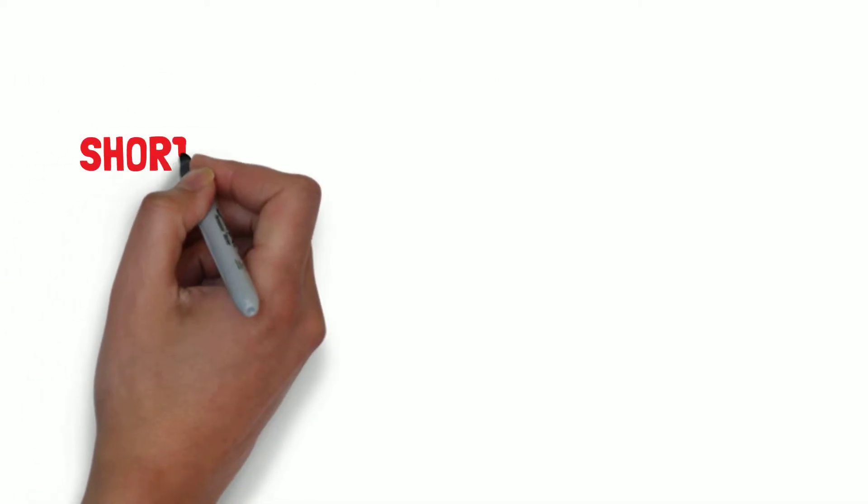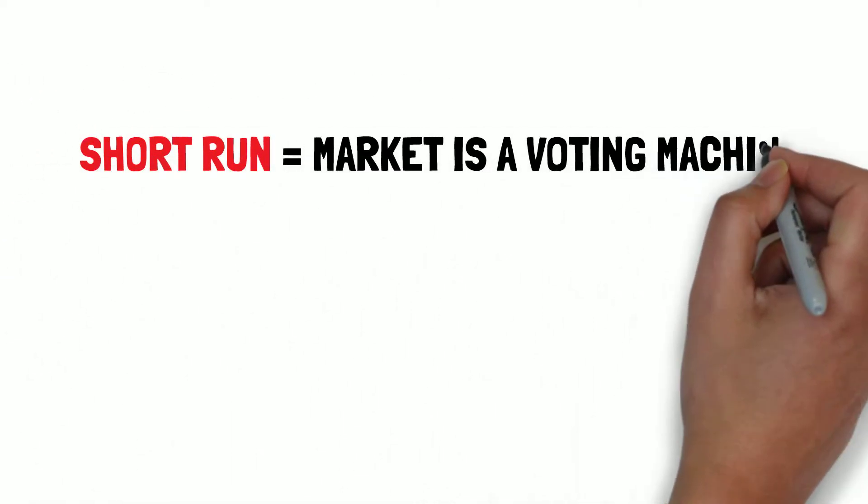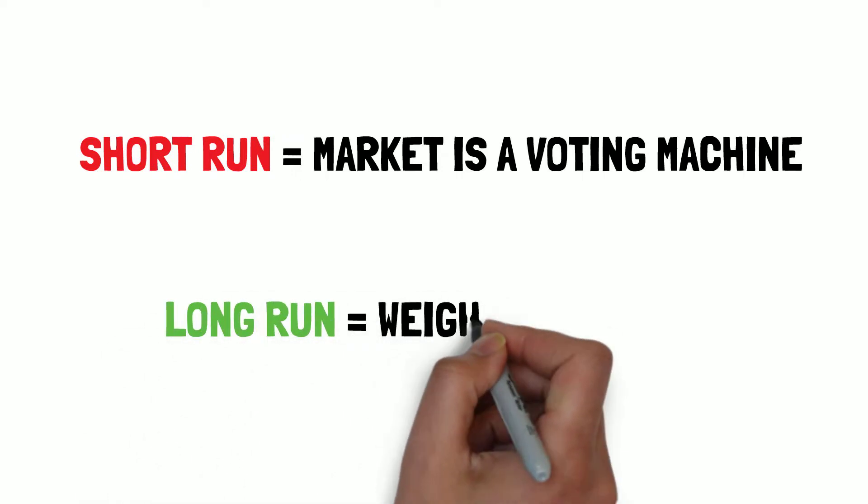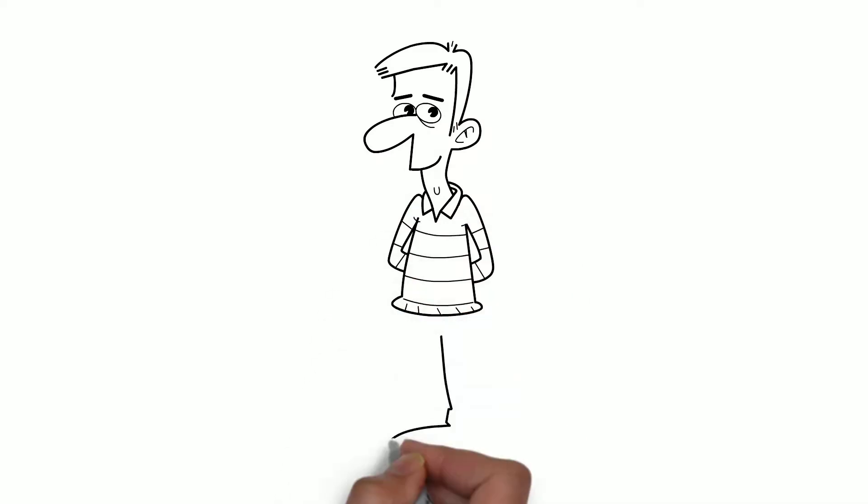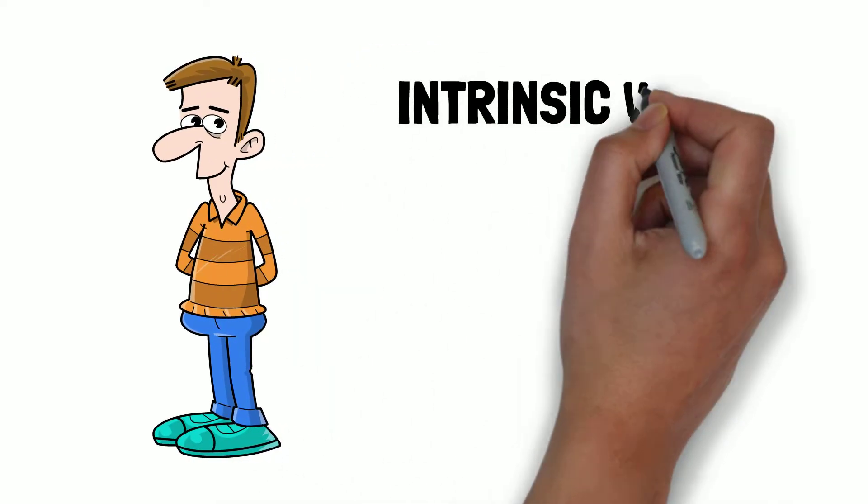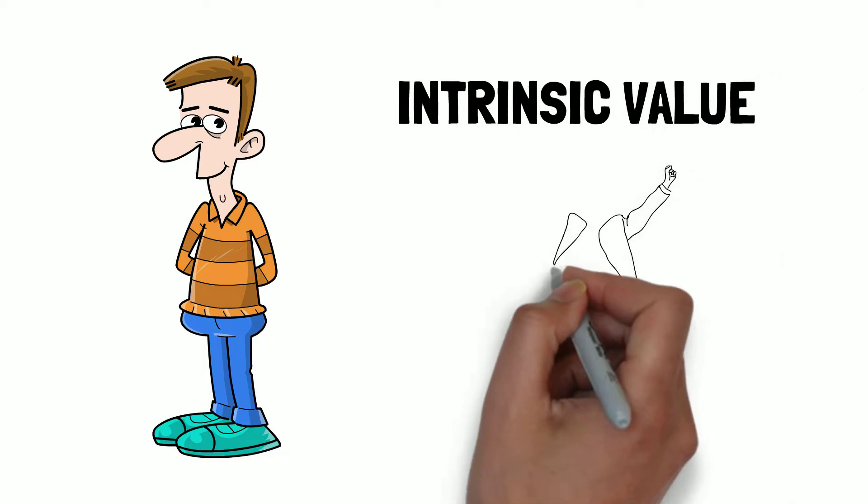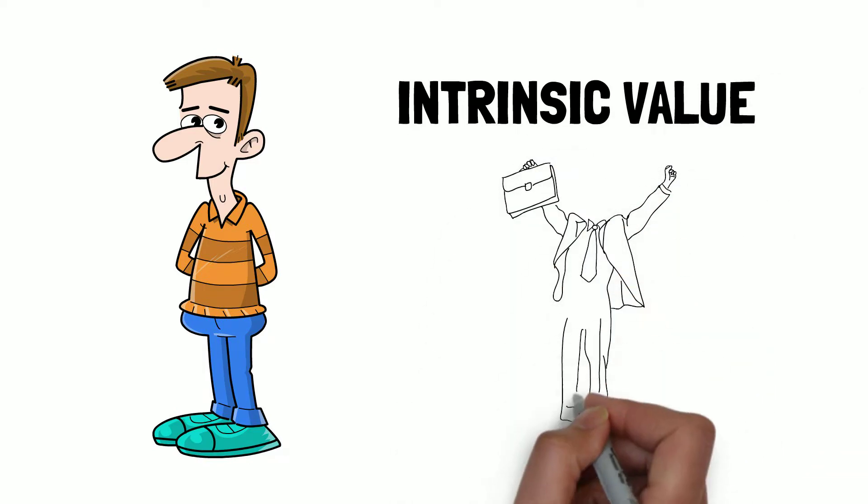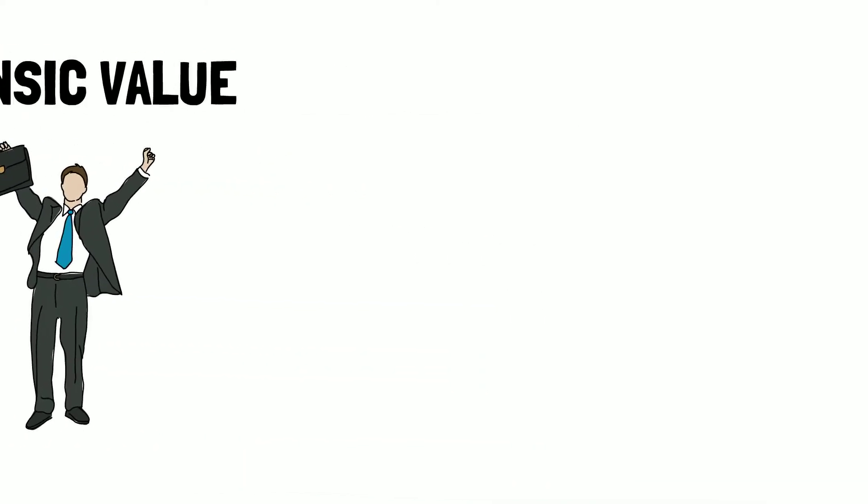As Benjamin Graham said, in the short run, a market is a voting machine, but in the long run, it is a weighing machine. The stock price in the short term is not that important as long as the company's intrinsic value is increasing at a satisfactory rate. In fact, it can be an advantage. It may give us the chance to buy more of a good thing at a bargain price.